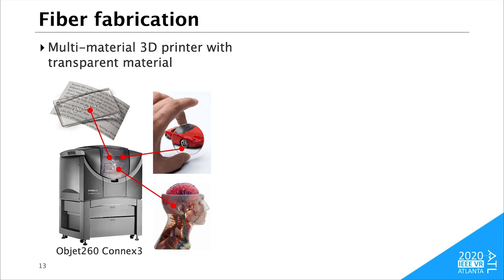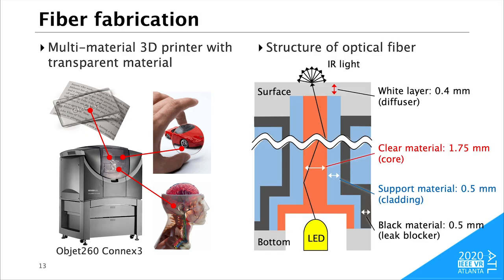We use a multi-material 3D printer that can print an object using transparent material. This is the structure of our optical fiber. We apply the clear and support materials as the core and cladding of our fiber respectively. To avoid crosstalk of infrared light leaked from fibers inside an object, we cover the fibers with a thin black layer. We cover the object surface with a thin white layer to increase both light diffusion of infrared light and the invisibility of the markers for human observers. The thickness of the materials are determined through several trials and errors.